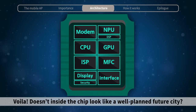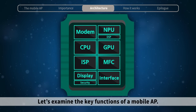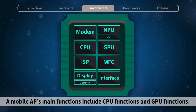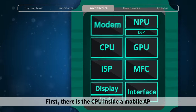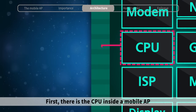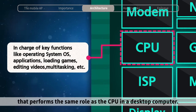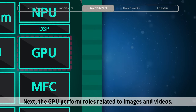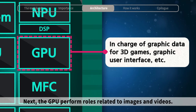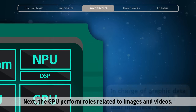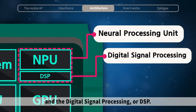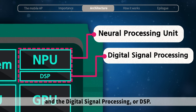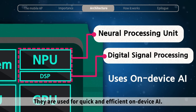Doesn't the inside of the chip look like a well-planned future city? Let's examine the key functions of a mobile AP. A mobile AP's main functions include CPU functions and GPU functions. First, there is the CPU inside a mobile AP that performs the same role as the CPU in a desktop computer. Next, the GPU performs roles related to images and videos. There are the Neural Processing Unit, or NPU, for AI applications, and the Digital Signal Processing, or DSP. They are used for quick and efficient on-device AI.